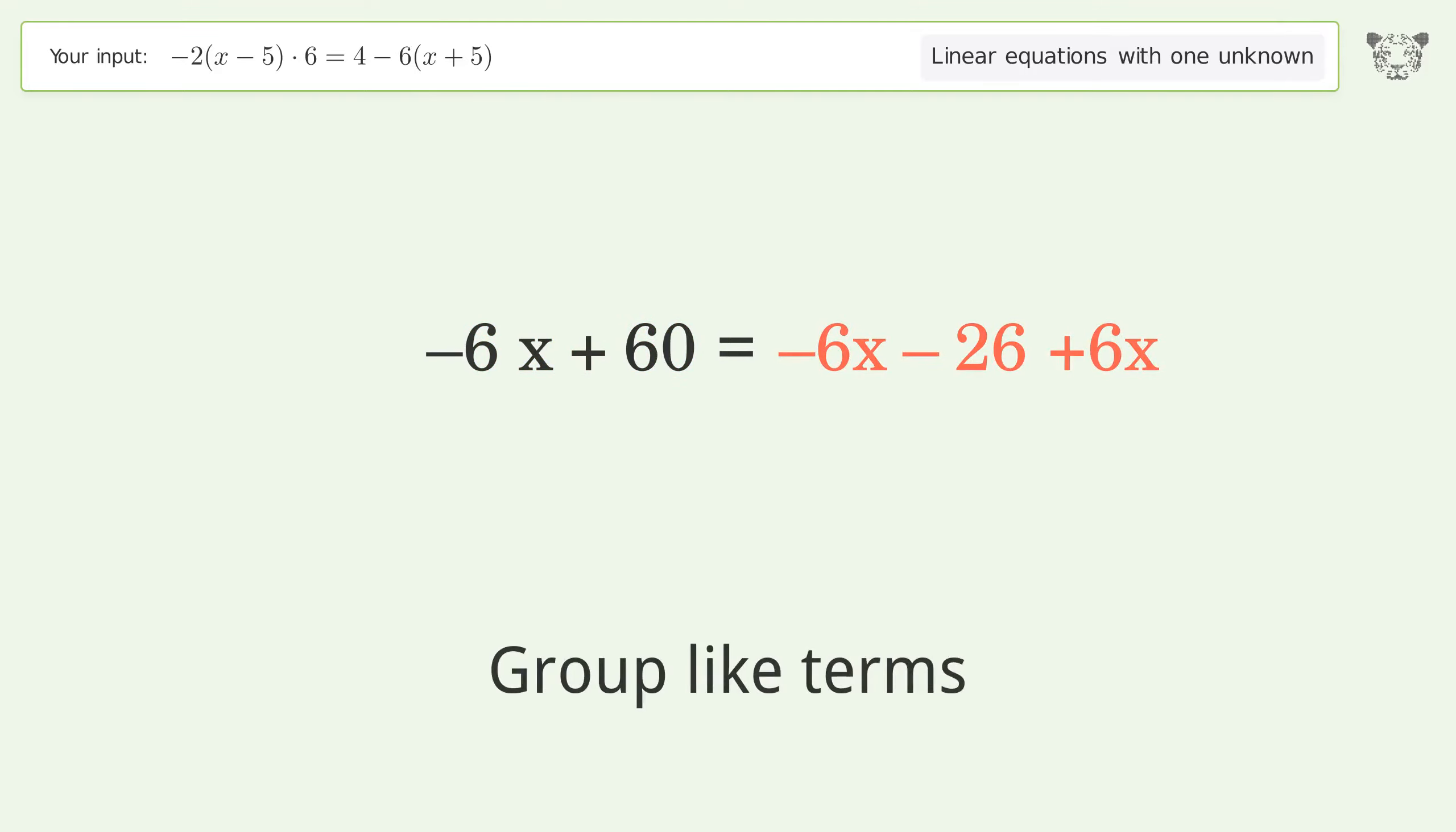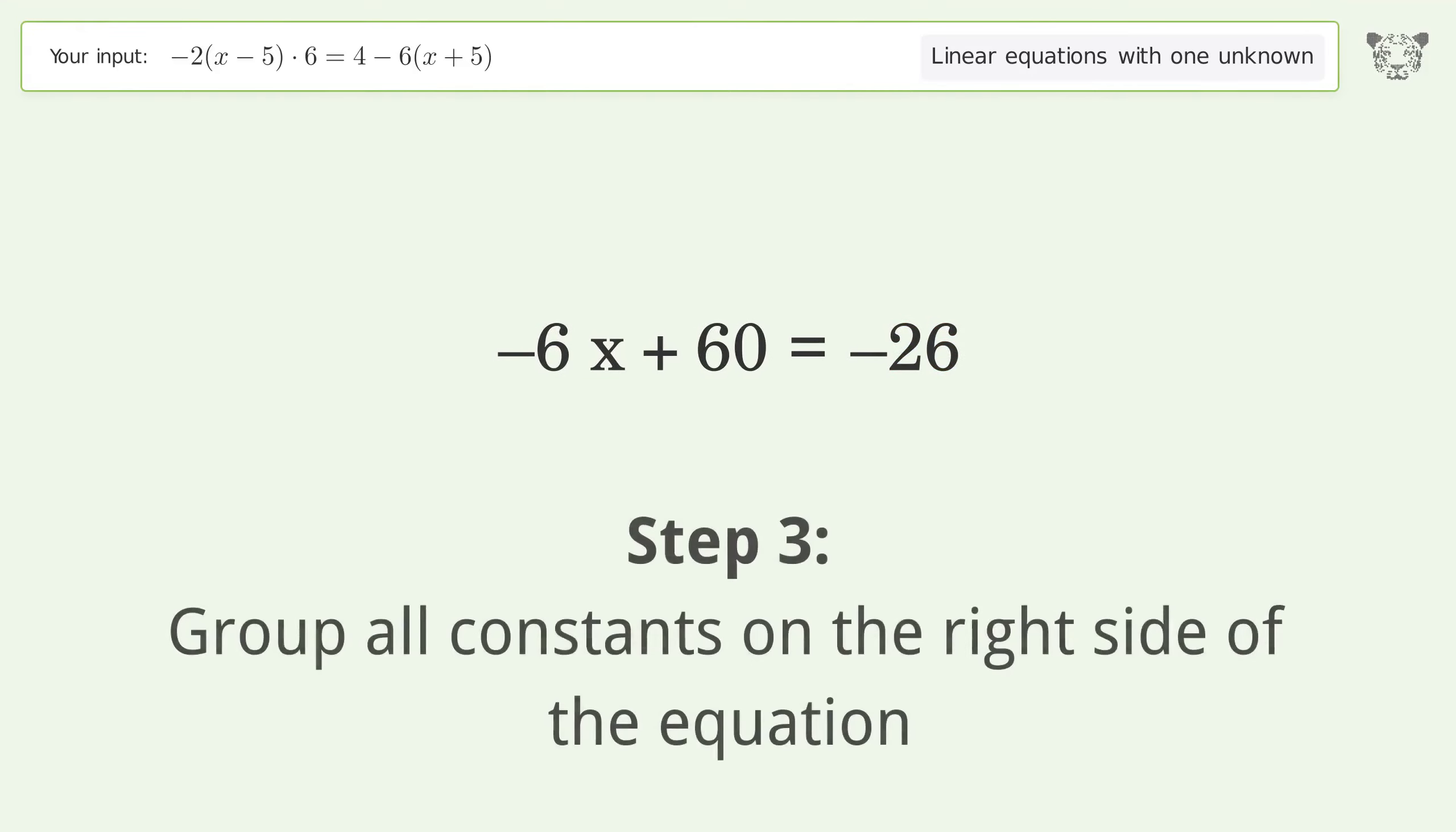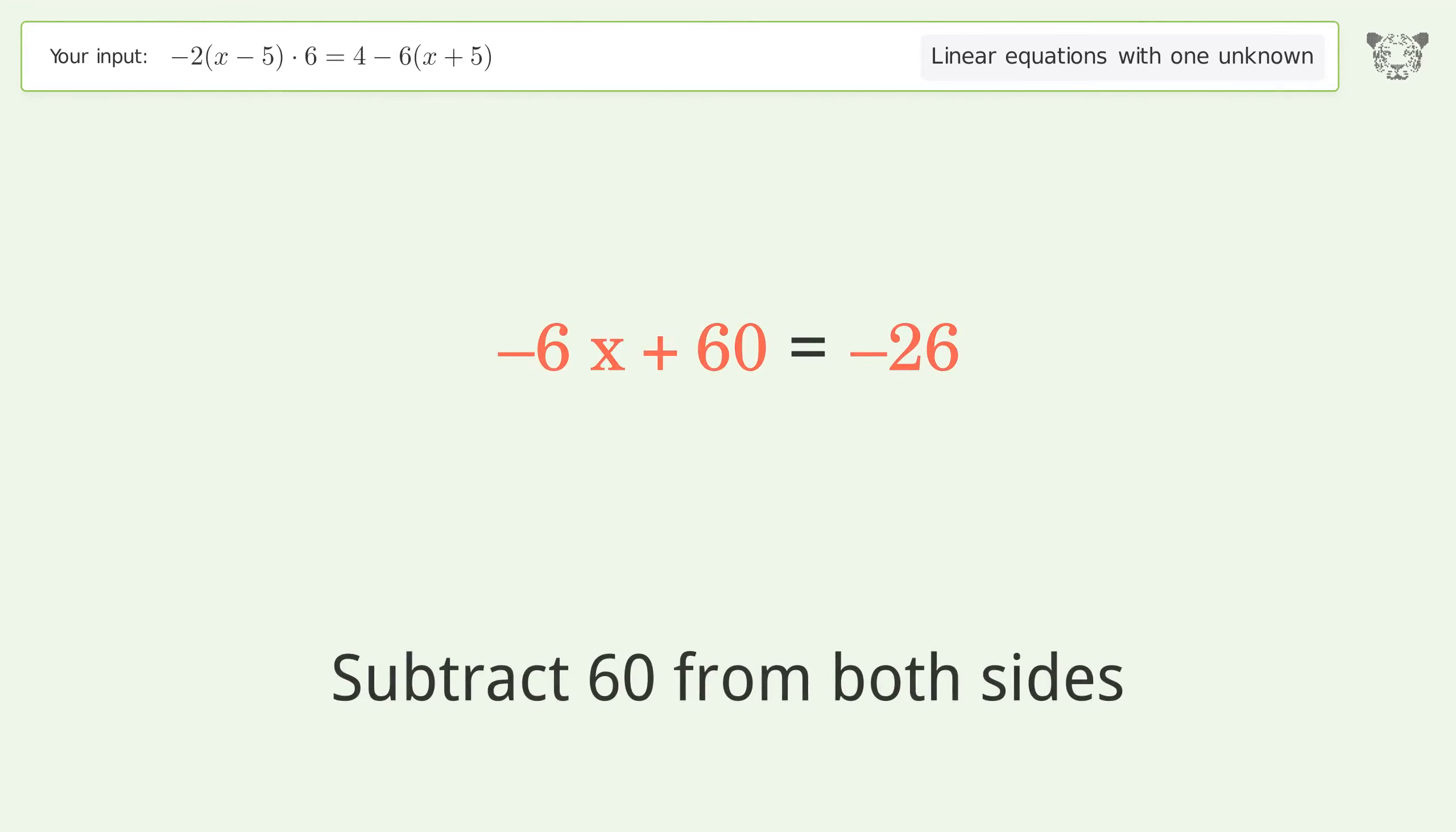Group like terms. Simplify the arithmetic. Group all constants on the right side of the equation. Subtract 60 from both sides.